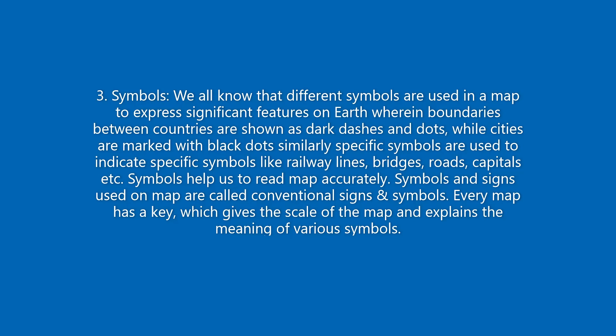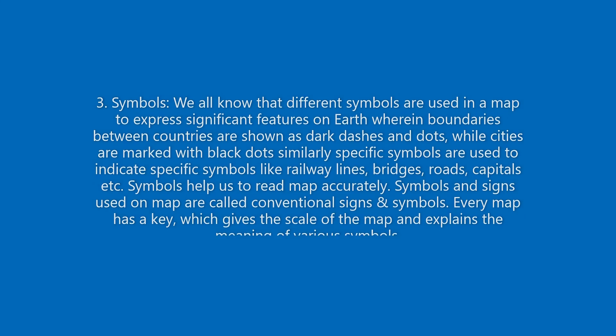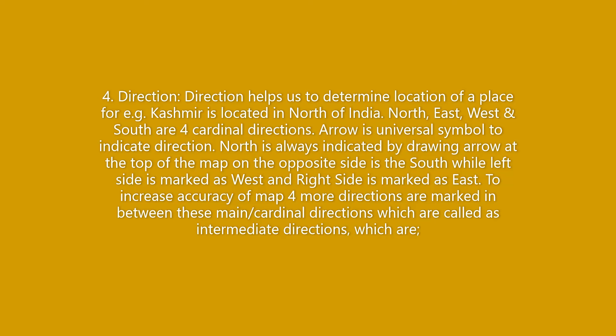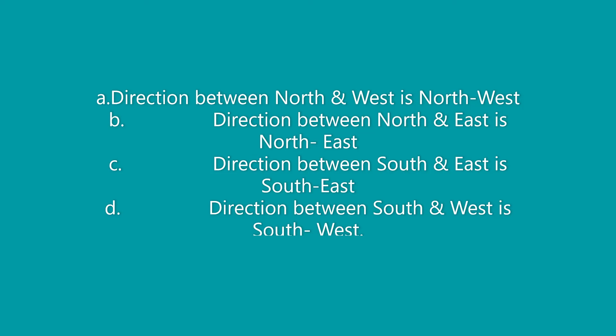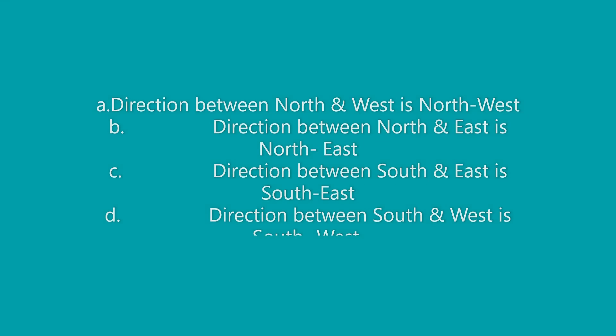Direction helps us to determine the location of a place. For example, Kashmir is located to the north of India. North, east, west, and south are the four cardinal directions. An arrow is a universal symbol to indicate direction. North is always indicated by drawing an arrow at the top of the map; on the opposite side is the south, while the left side is marked as west and the right side as east. To increase the accuracy of a map, four more directions are marked in between, called intermediate directions: the direction between north and west is northwest, between north and east is northeast, between south and east is southeast, and between south and west is southwest.